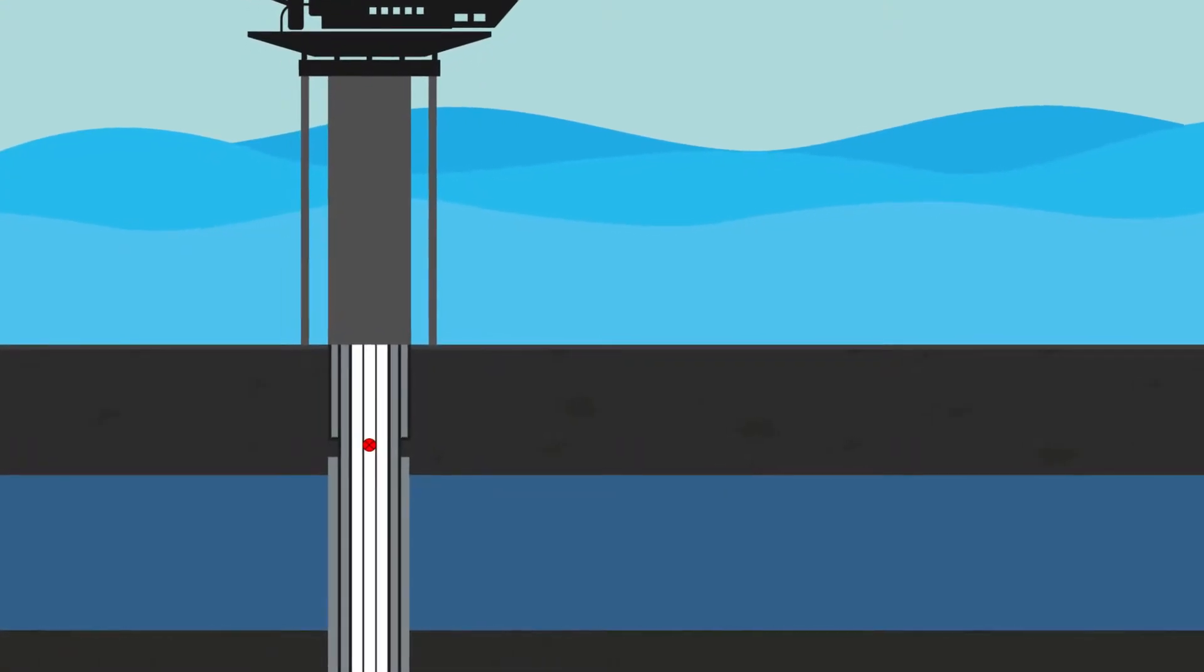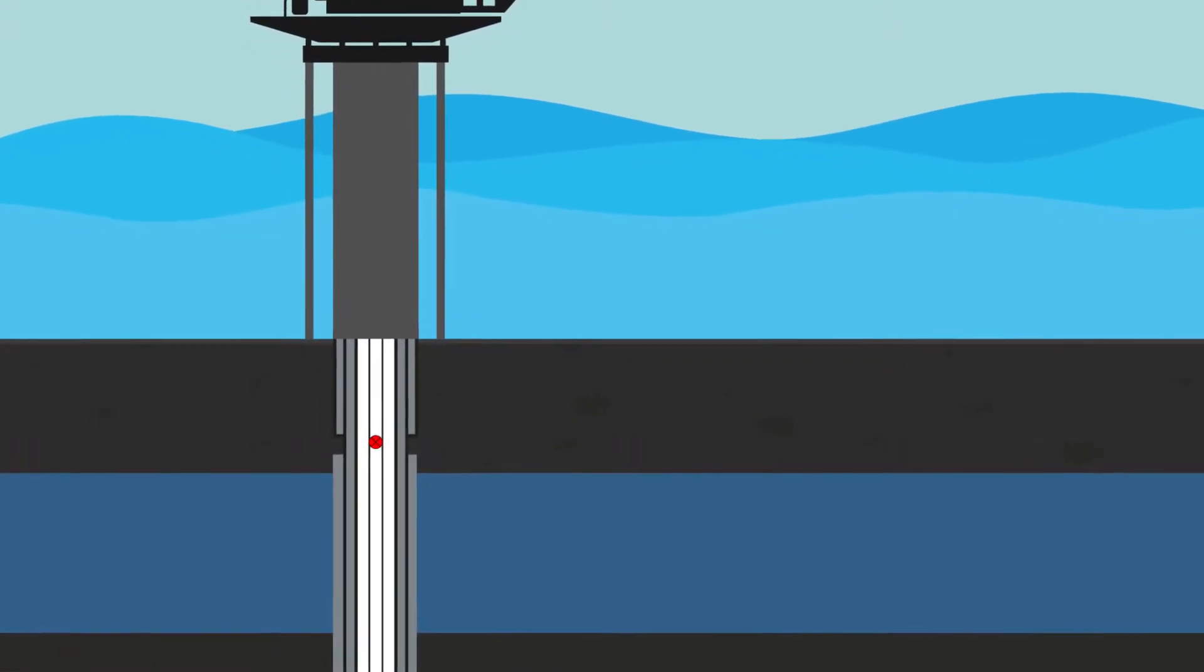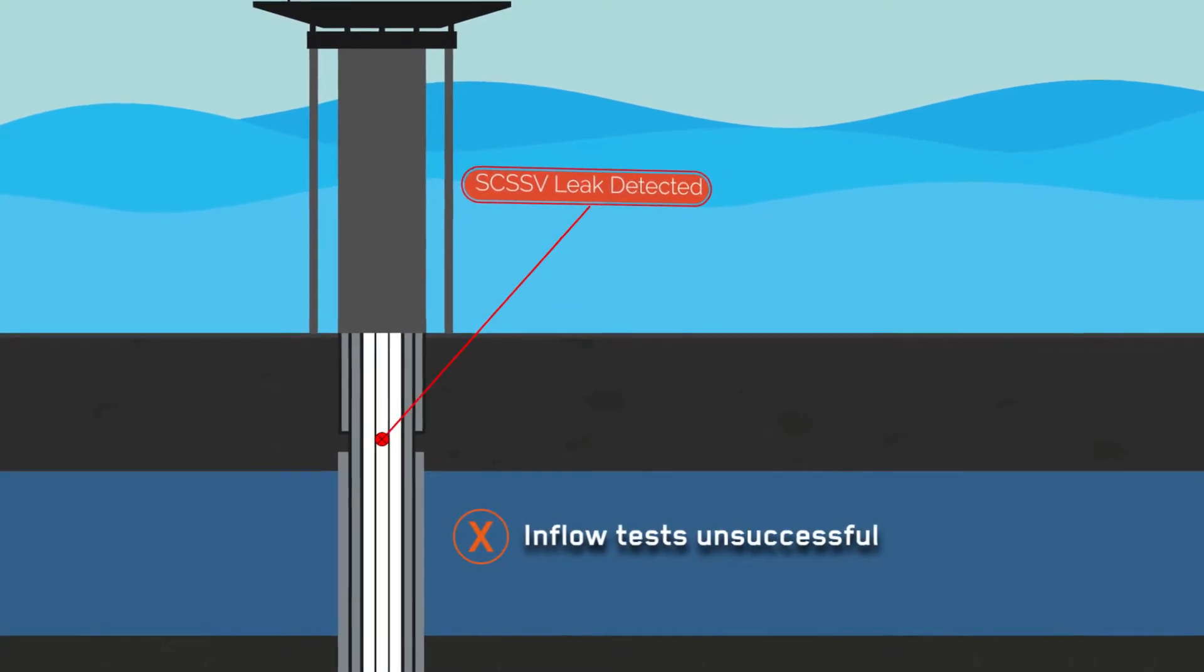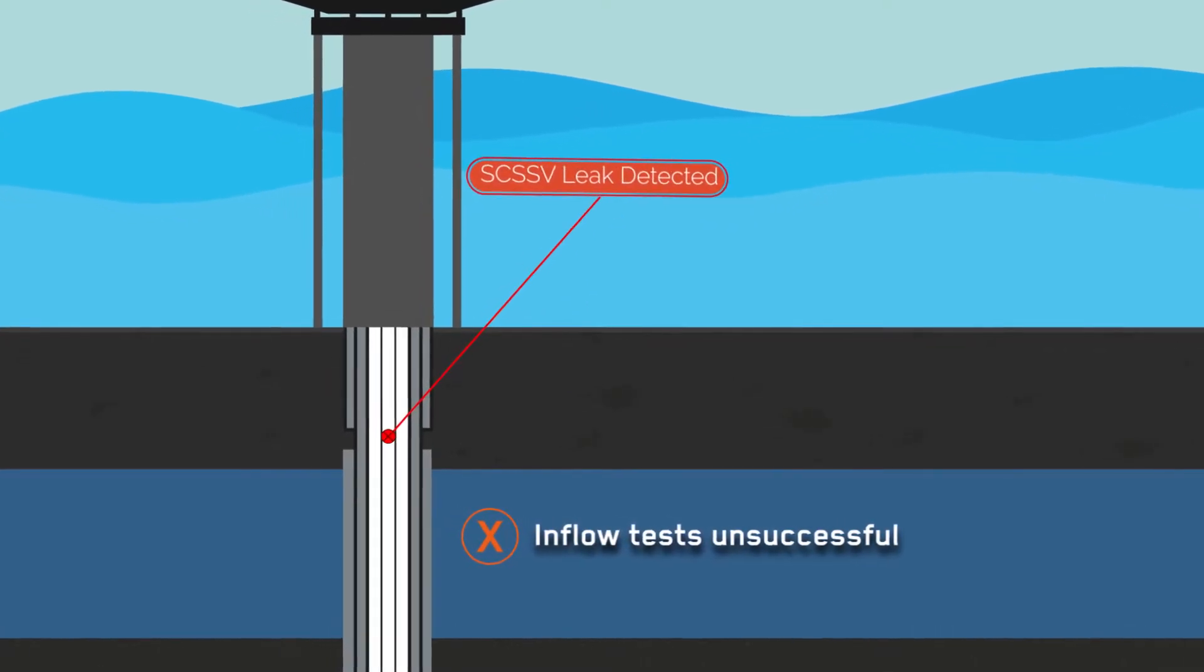The safety valve in the 7-inch tubing was leaking. Several inflow tests were performed and confirmed the leak rate exceeded the operator's integrity standards.